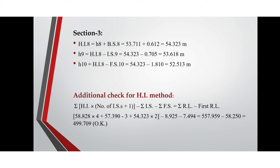Now applying the arithmetic check for the Height of Instrument method: sigma(HI × (number of intermediate sights + 1)) minus sigma intermediate sight minus sigma foresight equals sigma reduced level minus first reduced level. Equating the left-hand side and right-hand side, we get 499.709, confirming the calculations are correct.